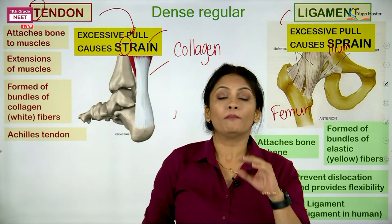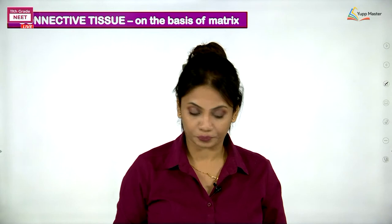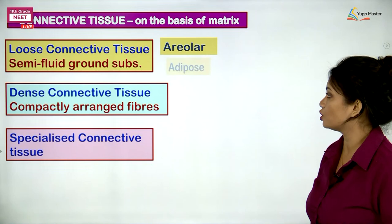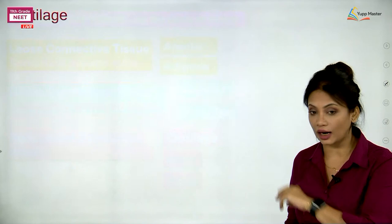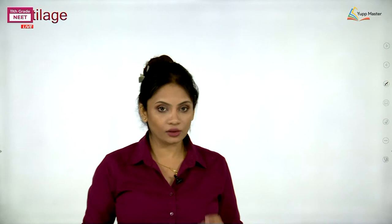Both tendon and ligament are examples of dense regular connective tissue. We have now finished loose connective tissue and dense connective tissue. Let us move forward towards specialized connective tissue, beginning with cartilage. Cartilage is an endoskeleton — along with bone, cartilage is an endoskeleton — but the difference is that cartilage is not as hard or strong as bone, which is why it provides a certain amount of flexibility.